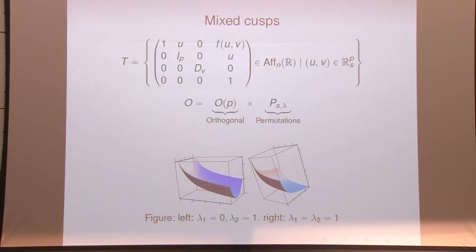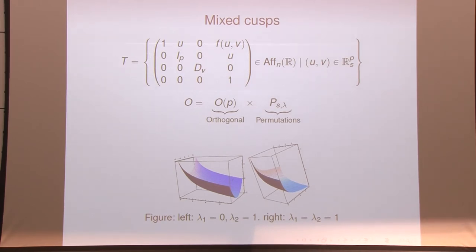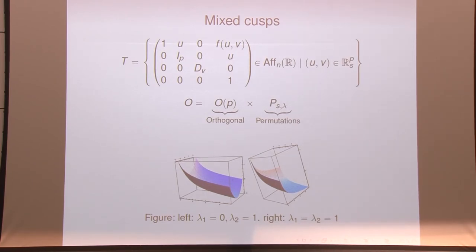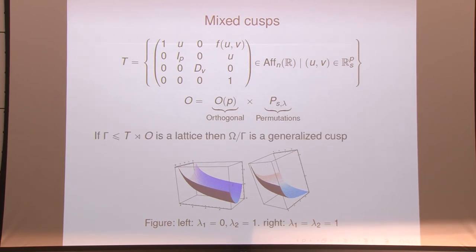Again there's a nice group: in this case it's mixed. In the horizontal direction, the matrix translates in the hyperbolic directions and dilates in the quasi-hyperbolic directions. The point stabilizer group is more complicated this time: you can do arbitrary orthogonal transformations in the hyperbolic directions, but only coordinate permutations where the coordinates agree in the other direction. So it really is a product of the previous examples. Again, you just take some lattice in this group, and that gives you an example of a generalized cusp.